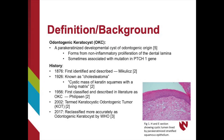Figure 1 shows an H&E section showing a cystic lumen lined by parakeratinized stratified squamous epithelium. It was first classified as the OKC in 1956, later termed the keratocystic odontogenic tumor, or the KOT, and in 2017 was reclassified more accurately as the OKC by the World Health Organization.